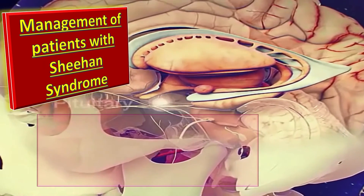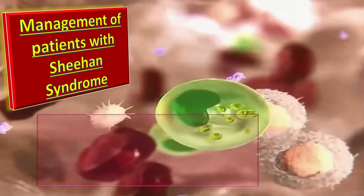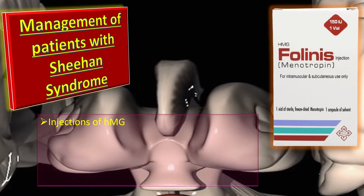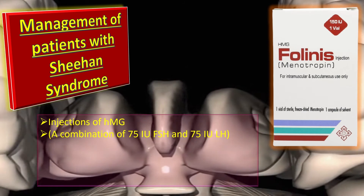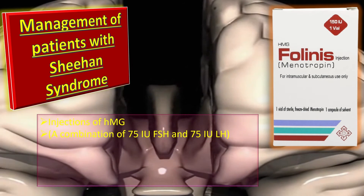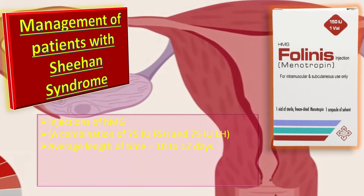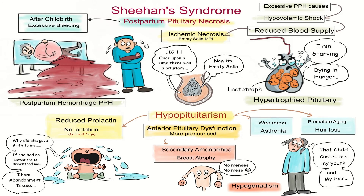The patients with Sheehan syndrome undergo successful ovulation with daily injections of HMG, which is a combination of 75 international units FSH and 75 international units LH. It is prescribed for an average length of 10 to 12 days, which directly stimulates the folliculogenesis to create the mature follicles and oocytes.